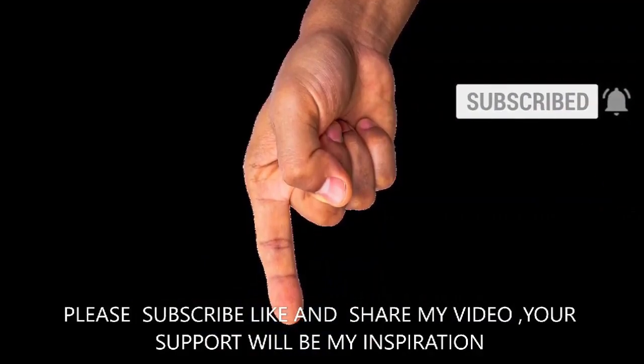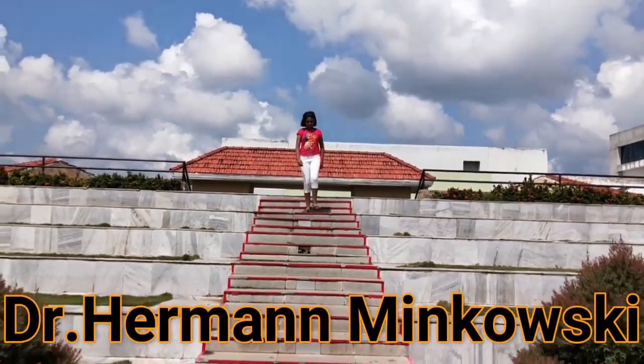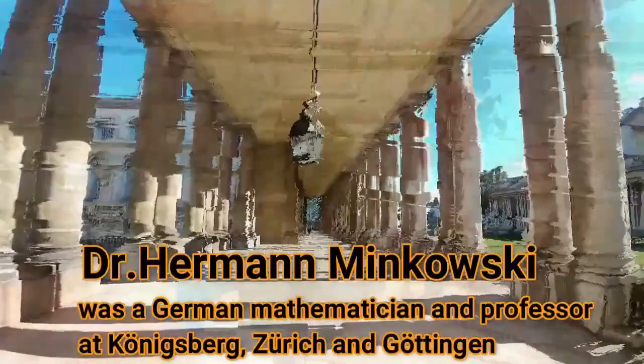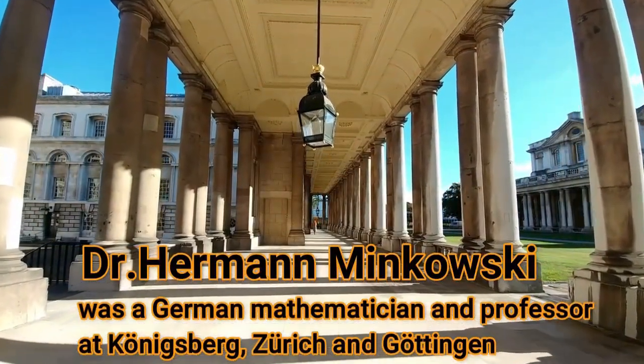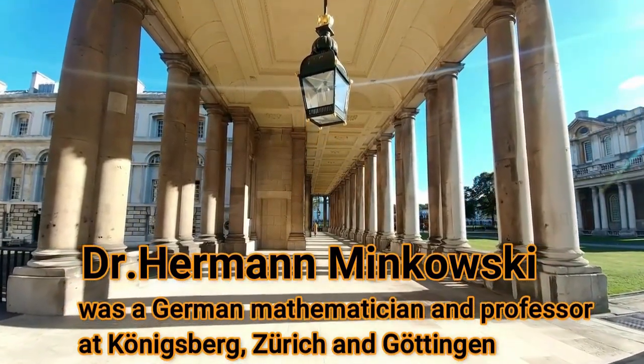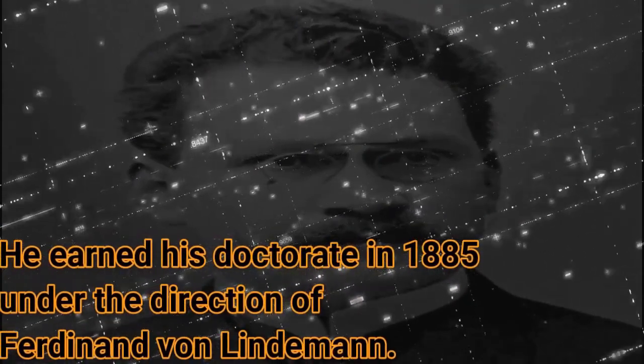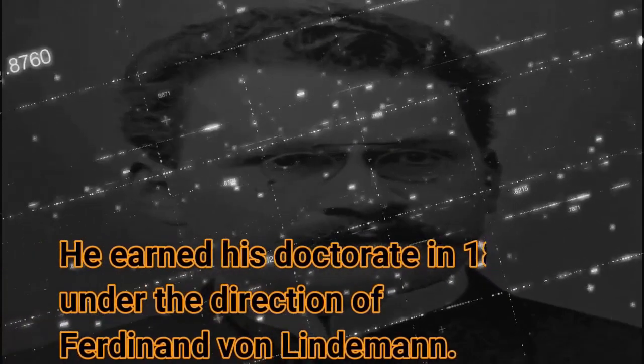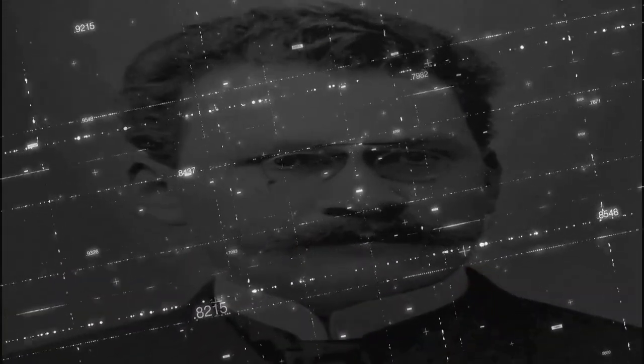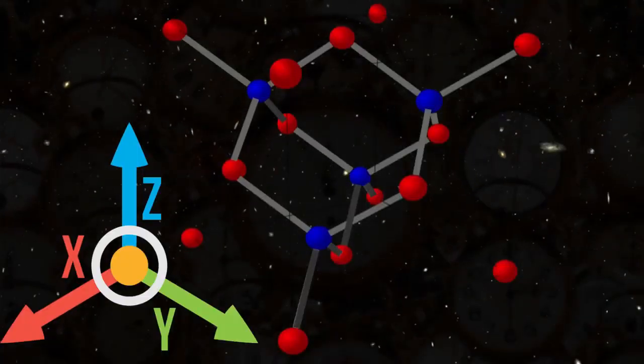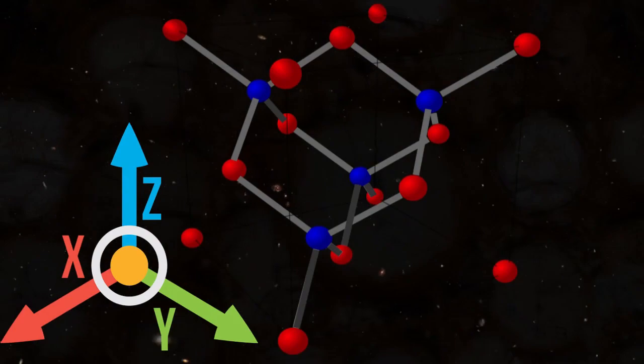Dr. Hermann Minkowski, one of Einstein's teachers and friend of another renowned mathematician David Hilbert, was born June 22, 1864 and died January 12, 1909. He was a German mathematician and professor at Königsberg, Zurich, and Göttingen. He earned his doctorate in 1885 under the direction of Ferdinand von Lindemann. In 1883, he was awarded the Mathematics Prize of the French Academy of Sciences for his manuscript on the theory of quadratic forms.